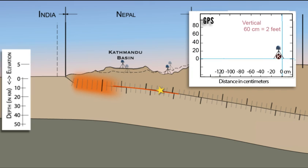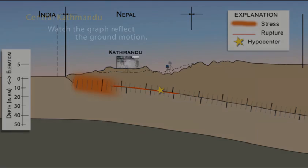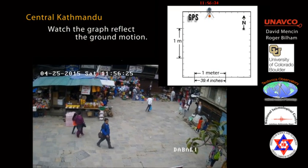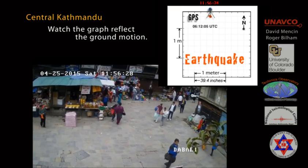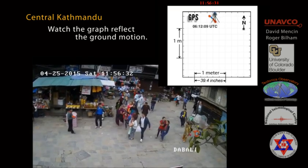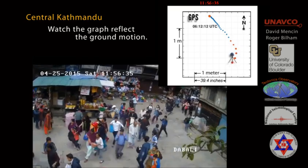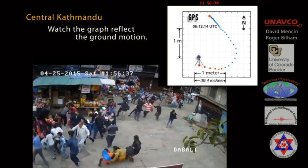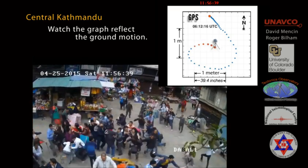This displacement uplifted Kathmandu over 60 centimeters and moved the city 1.2 meters south towards India. A GPS station in the Kathmandu Basin recorded the ground motion, while video captured people's response. Following ground motion of 1.5 meters to the southeast over the first 10 seconds, the ground lurched 1.6 meters west in less than 3 seconds, causing people to stagger and some to fall.